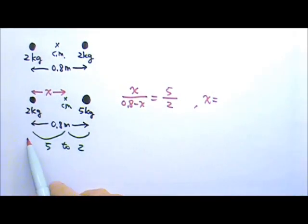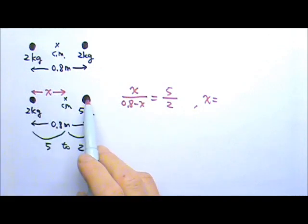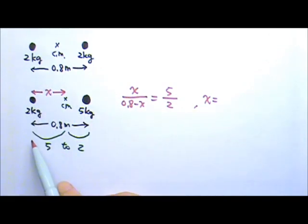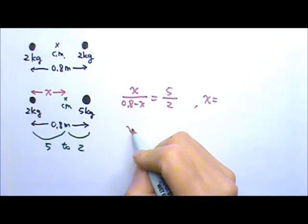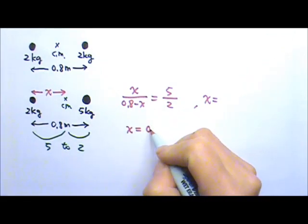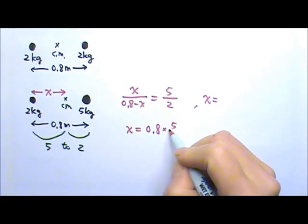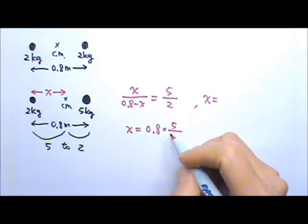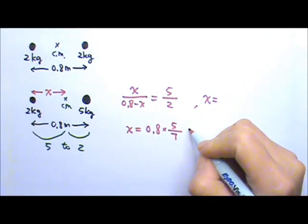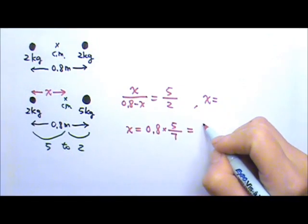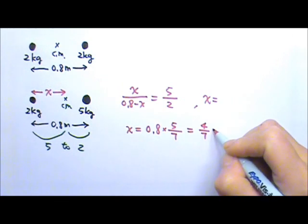Or we can say we can chop the total distance of 0.8 meters into 5 plus 2, 7 pieces. The distance here to here would be 5 out of the 7 pieces. Which means x will equal to a fraction of the 0.8 meters. And that fraction is 5 out of the 7 pieces. So 5/7 of the 0.8 meters, which gives us 4/7 of a meter.